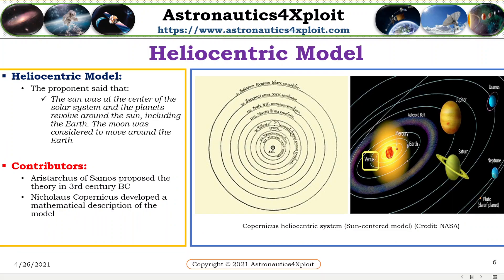Heliocentric model: The proponent of this model stated that the sun was at the center of the solar system, and the planets revolved around the sun, including the heart. The moon was considered to move around the heart. Greek philosopher Aristotelian of Samos proposed the theory in the 3rd century BC, but was not taken seriously because of the influence of the Aristotelian view of the universe and lack of proof of the theory at that time. During the Renaissance era, mathematician and Catholic cleric Nicholas Copernicus developed a mathematical description of the model to explain the motion of the earthly bodies.